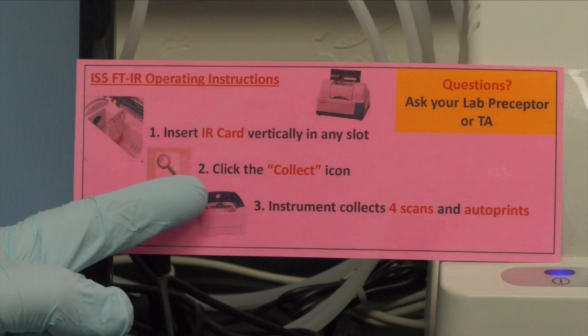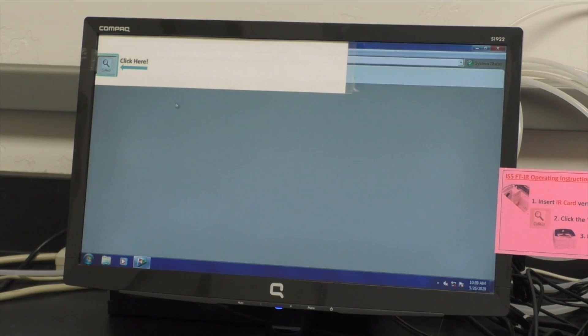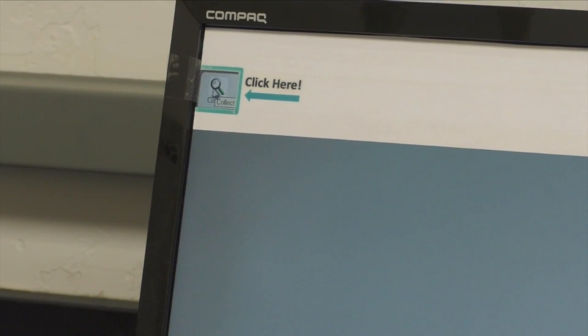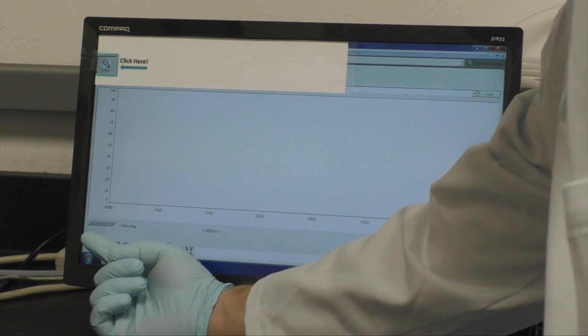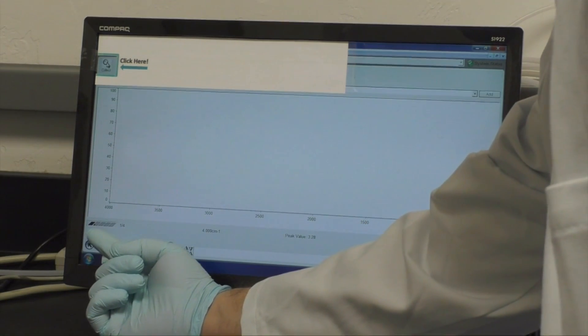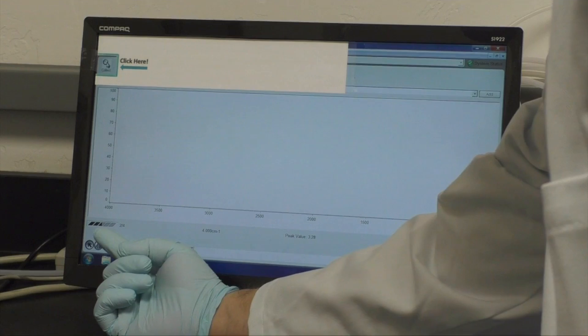The second step is to click on the collect icon. Only click one time on the collect icon as shown here. Once you click the icon, the software will collect four scans, make all the adjustments to the spectrum, and automatically print it.